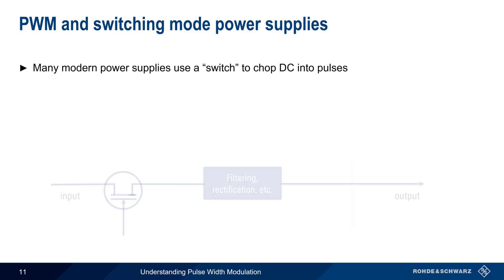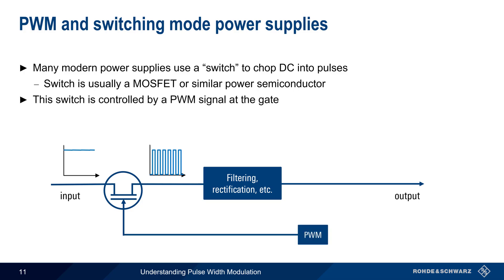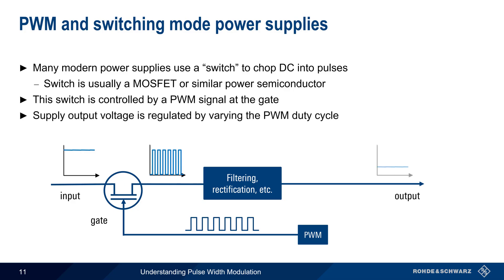Pulse width modulation is also at the heart of modern switch mode power supplies that work by chopping DC into pulses. The switch is usually a MOSFET or other type of power semiconductor, and in this example the switching is controlled by a pulse width modulated signal at the MOSFET gate. The supply output voltage is regulated by comparing the output voltage to a reference voltage, and then varying the duty cycle of the pulse width modulated signal. A higher duty cycle will increase the output voltage, and a lower duty cycle will decrease the output voltage.